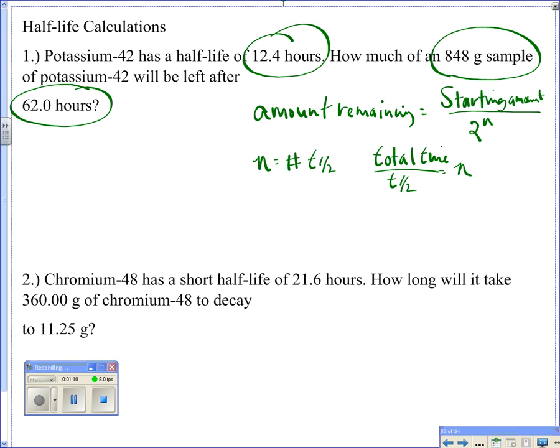So let's just see what we've got. So it tells me my starting amount, so I have 848 grams of it, so that is my starting amount. So I know I'm going to divide it by 2. And then I need to figure out this n. So they tell me my total time that's going to pass is 62 hours, and they tell me my half-life is 12.4 hours.